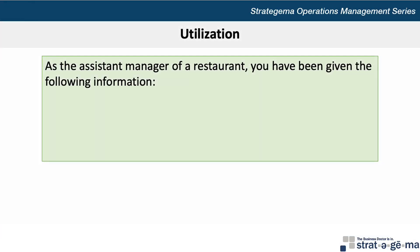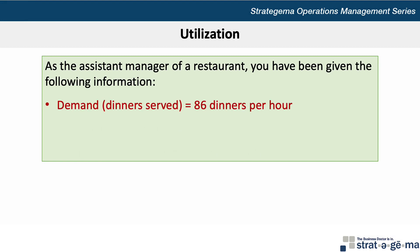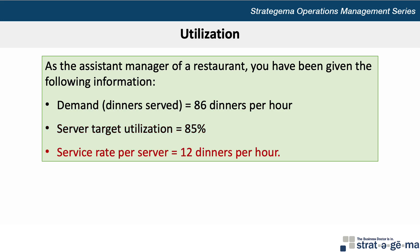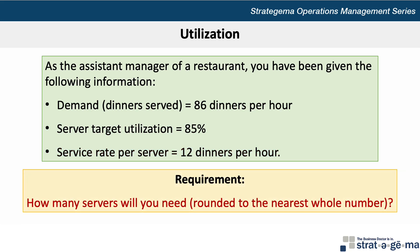Here's the data for our problem. As the assistant manager of a restaurant, you've been given the following information: demand or dinners served is 86 dinners per hour, server target utilization is 85%, and the service rate per server is 12 dinners per hour. The requirement is to determine how many servers you'll need, rounded to the nearest whole number.